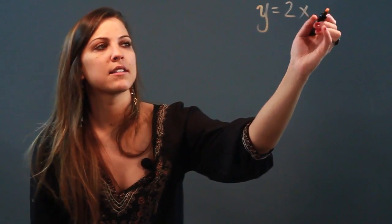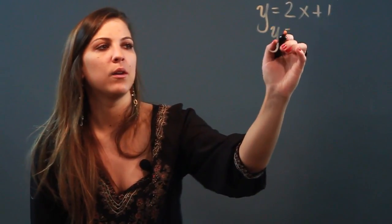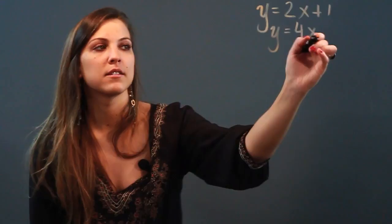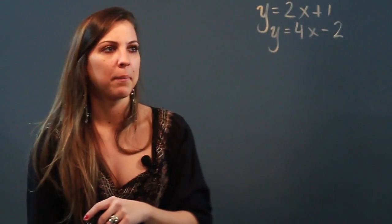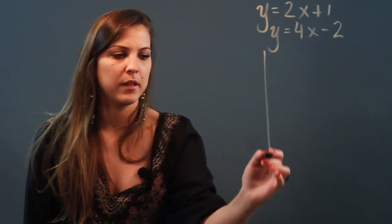So if you have a system of equations like y equals 2x plus 1, and you've got y equals 4x minus 2, you want to graph each line separately. The lines are already in y equals mx plus b form, which makes it a little bit easier.